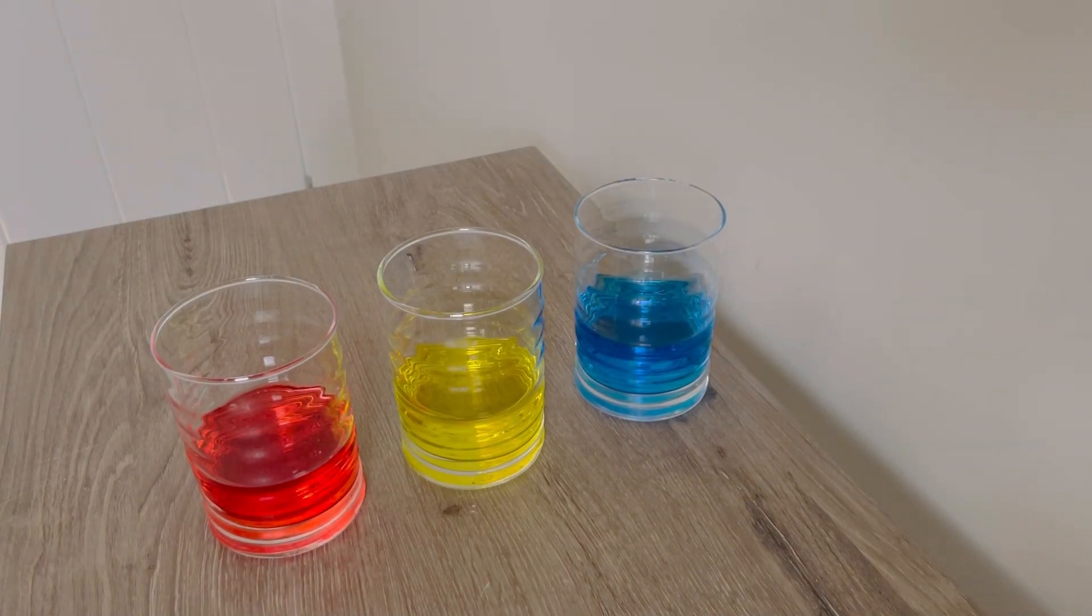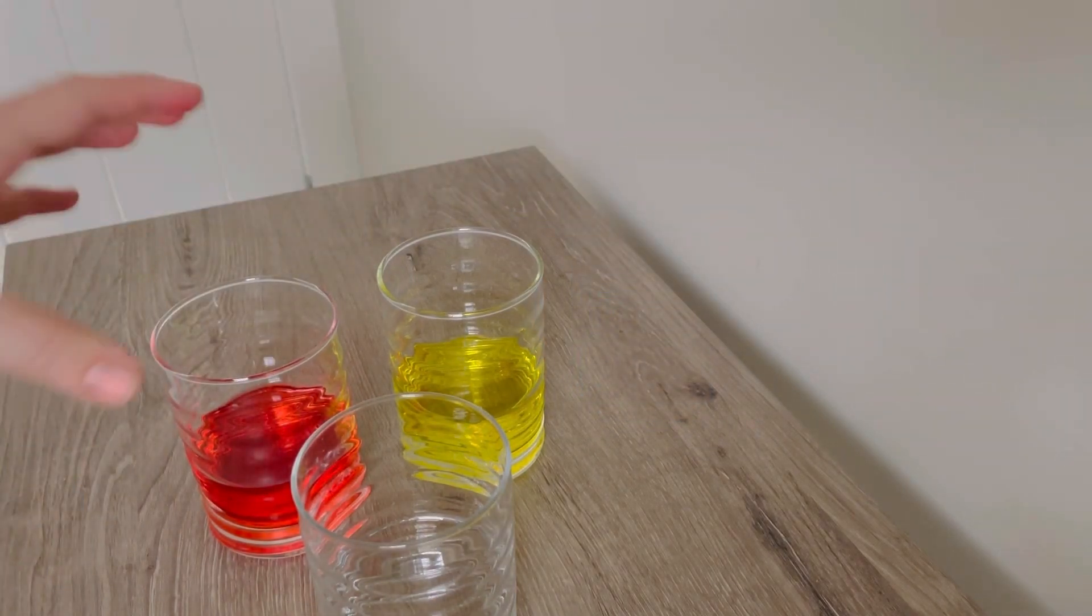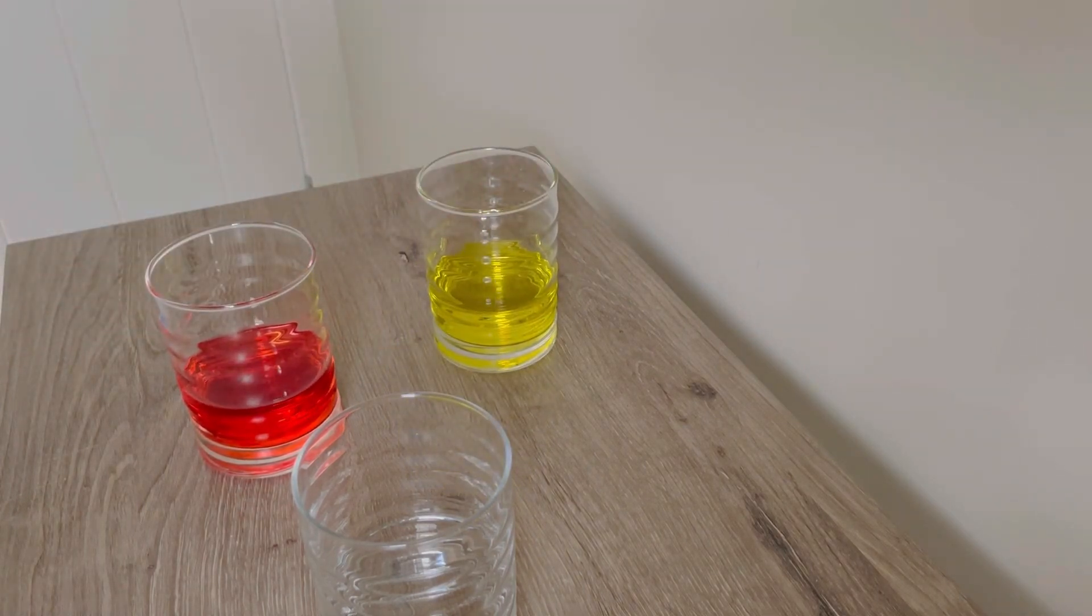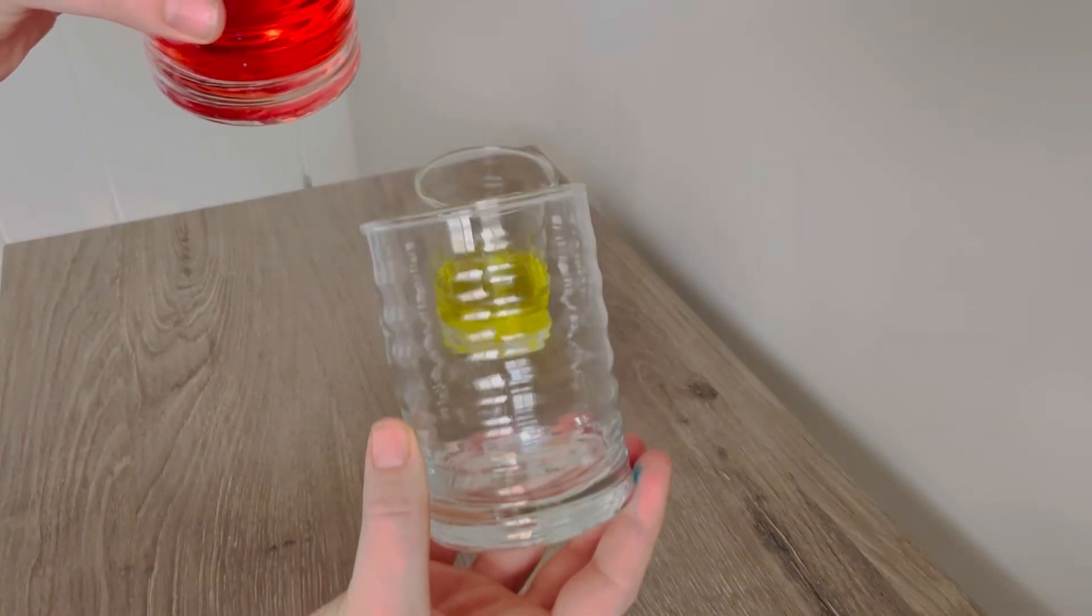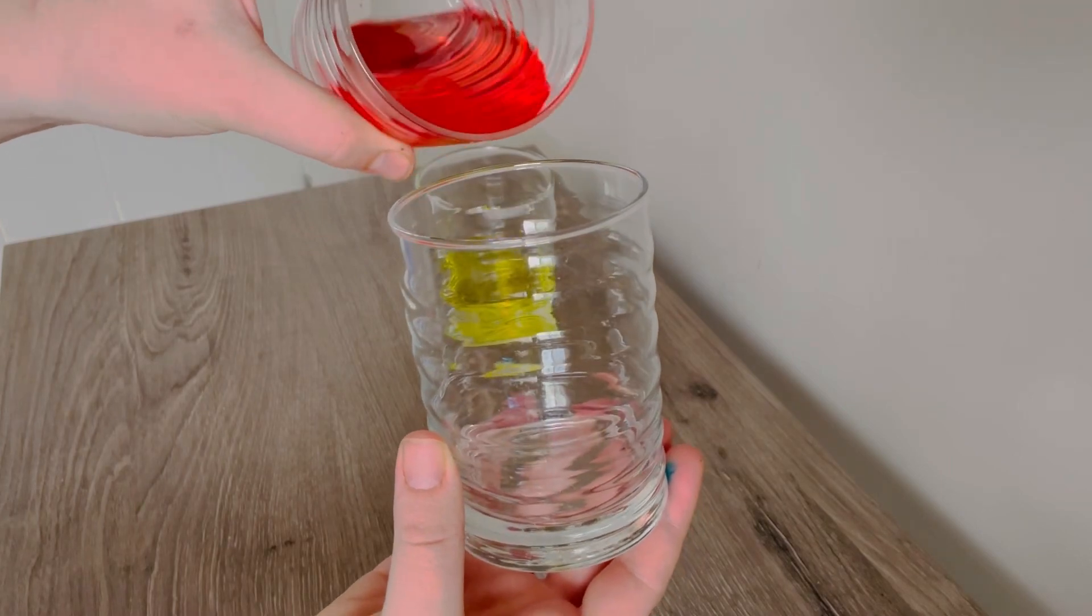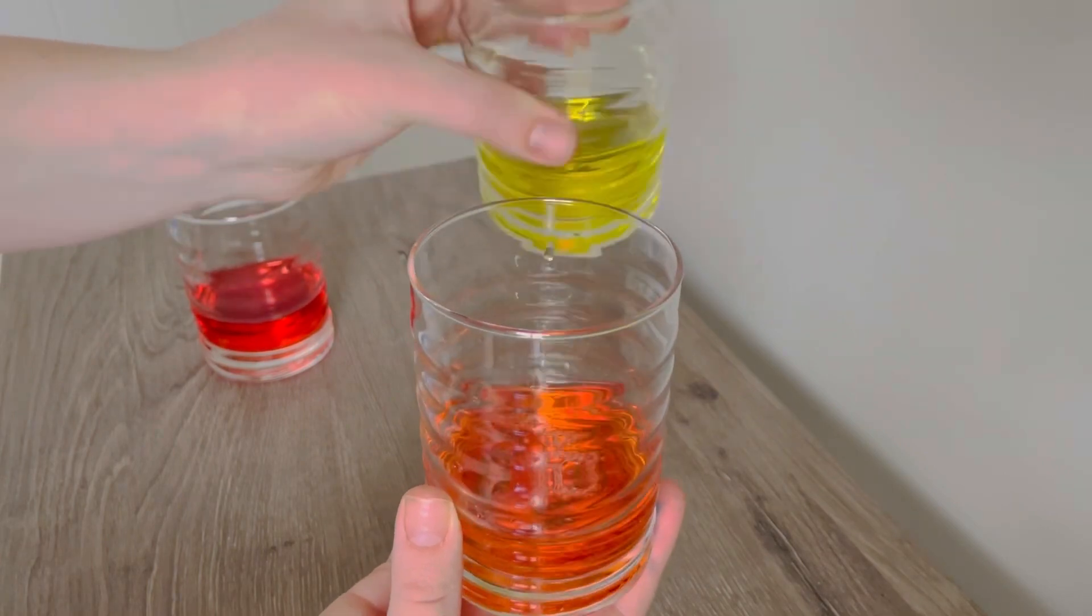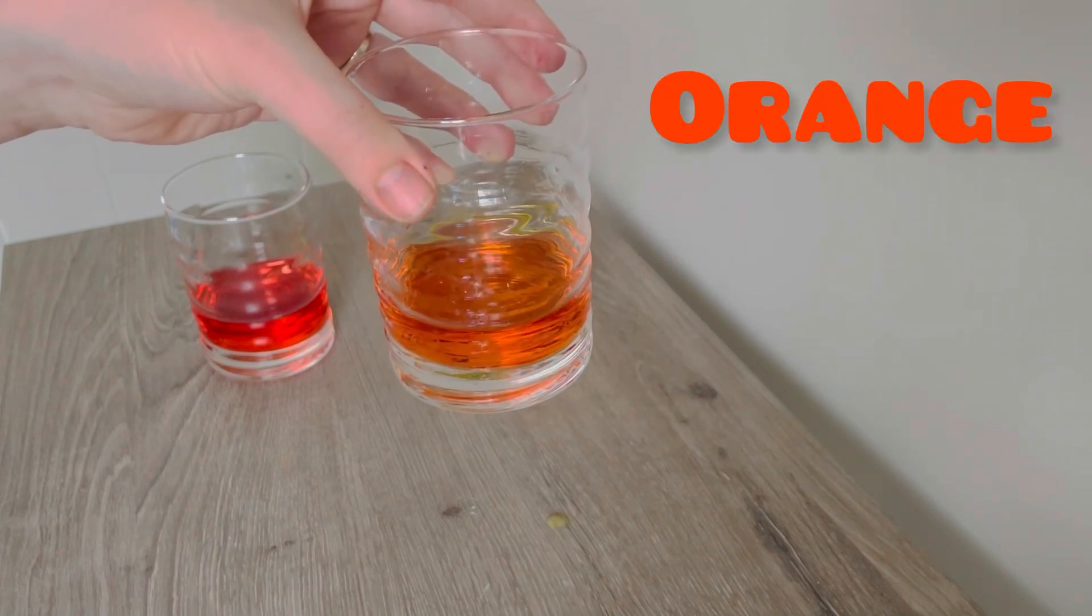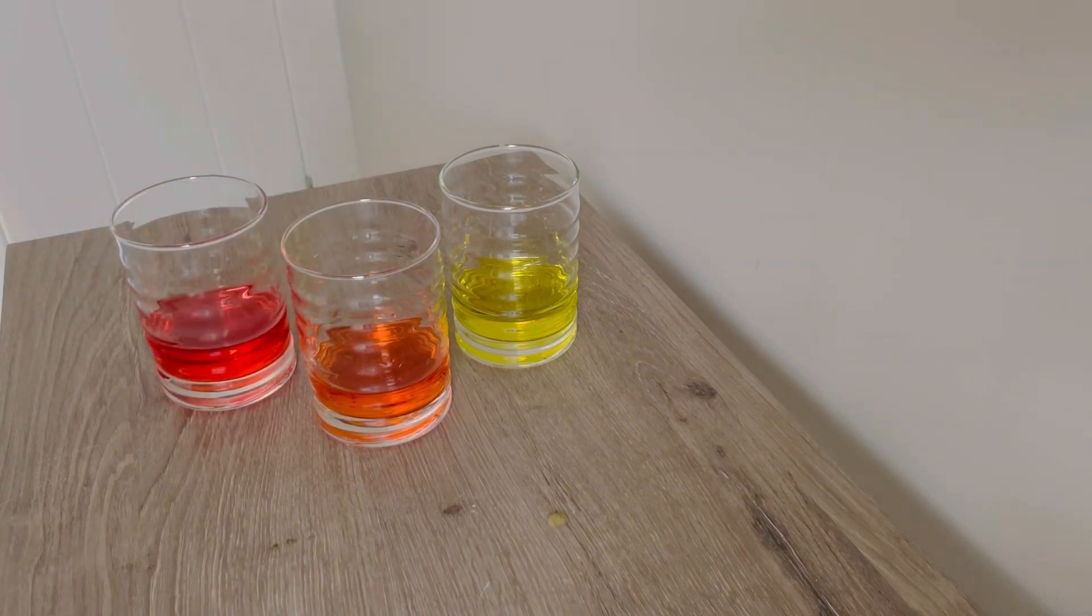Now, I wonder what'll happen if we take our red and our yellow and we mix them together. Let's go. Put it right here. Red and yellow. Do you see? It is orange. Wow. We have red, orange, and yellow.